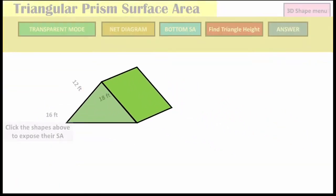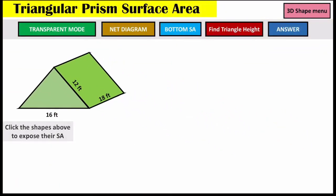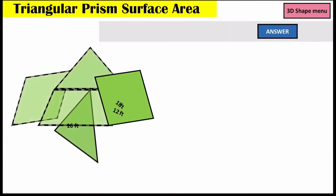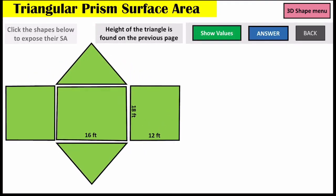Next is our triangular prism. A triangular prism can be difficult for some — it's going to invoke the Pythagorean theorem. If you haven't done that in a while, I'd recommend going back and watching that video. We're going to find each length of this triangle. Looking at the net diagram, notice that we have three rectangles and two triangles, so we need to determine the surface area of both the two triangles and the three rectangles.